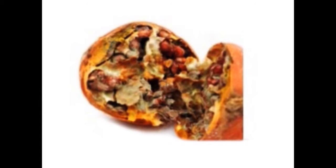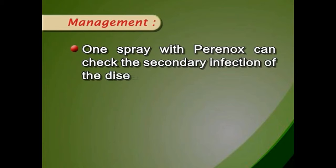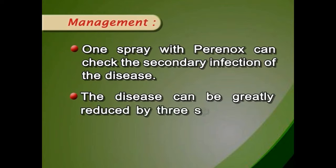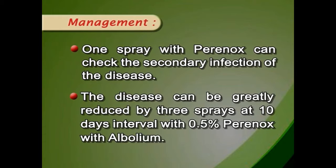Phomopsis fruit rot is caused by Phomopsis species. The disease starts from the calyx and gradually spreads over the entire fruit. Pycnidia of the pathogen appear on the affected area. The dry rot starts from leaves and moves to the fruits. One spray with Paranox can check secondary infection. The disease can be greatly reduced by 3 sprays at 10 days interval with 0.5% Paranox with Aureomycin.